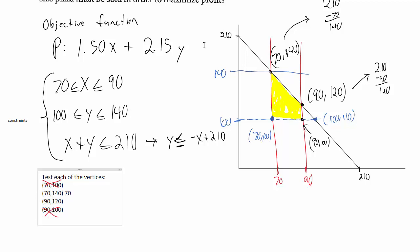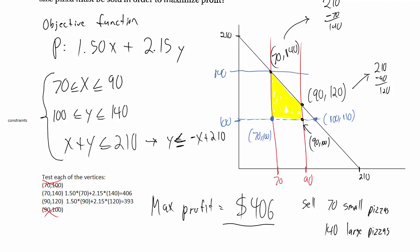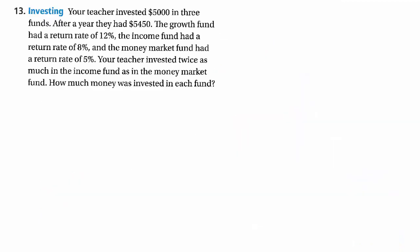So now I'm just going to test my objective function, my profit function. I make a buck 50 profit for each small pizza. So it's a buck 50 times 70 small pizzas plus $2.15 profit for all of my large pizzas. So my profit there is $406. A profit in the other scenario, 90 smalls and 120 larges is $393. So 70 smalls, 140 larges is going to be the way I make my maximum profit there. They don't ask for the maximum profit, but I thought it would be useful to show. Again, you don't need to necessarily graph this. Just a little bit of, you can just guess and check those two.